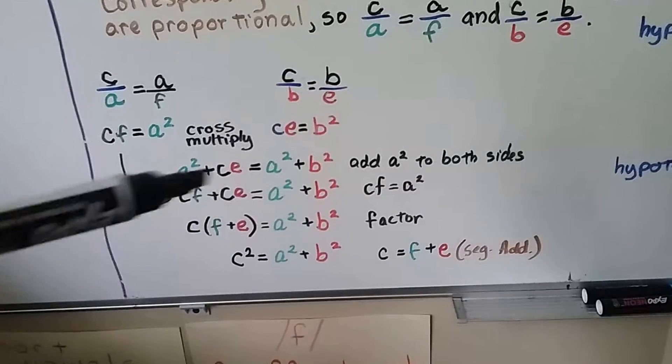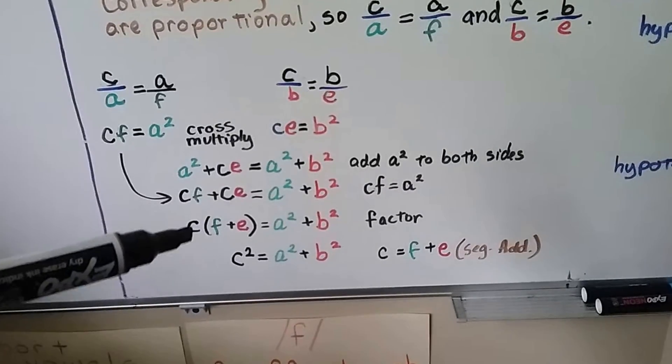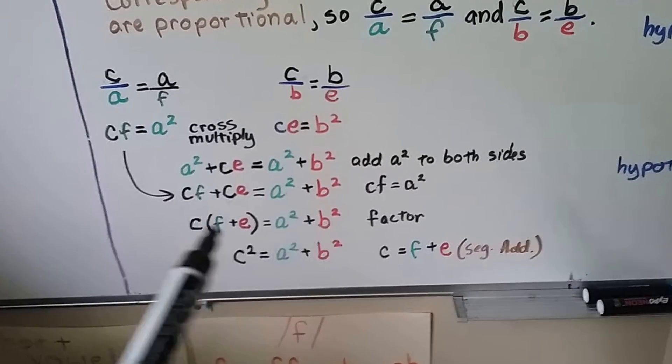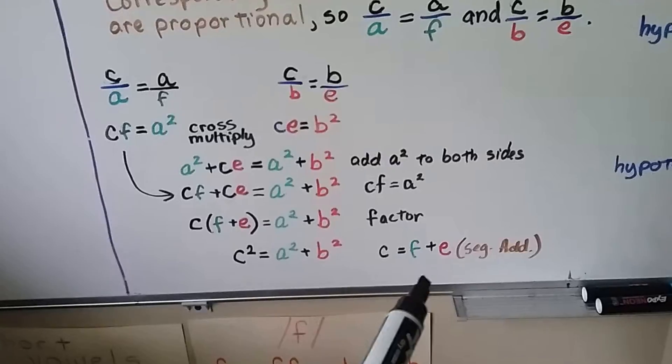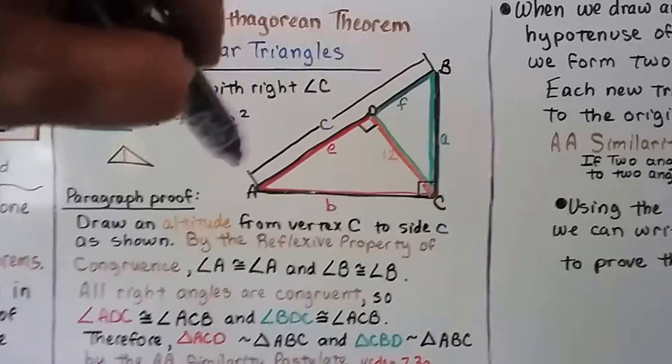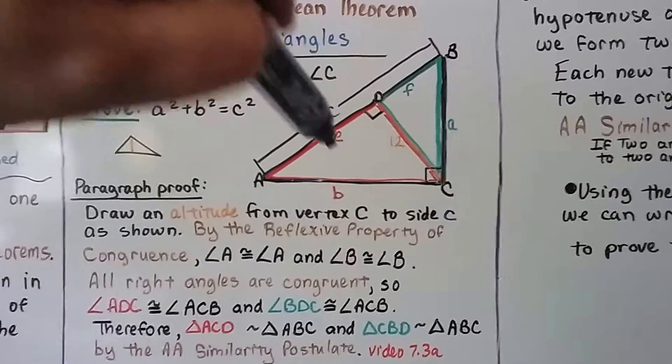And we've got a C and a C, so we can factor this as C times F plus E is equal to a squared plus b squared. But you know what? F plus E is equal to C because of the segment addition. C is equal to F plus E, see?